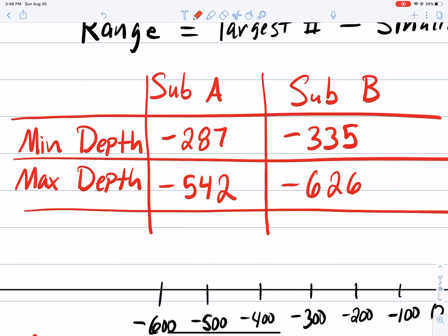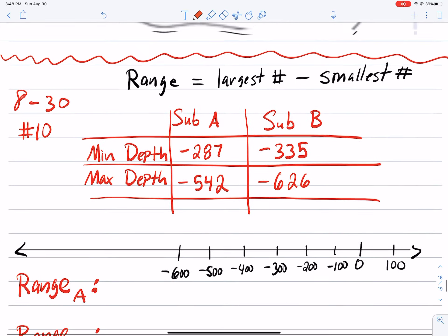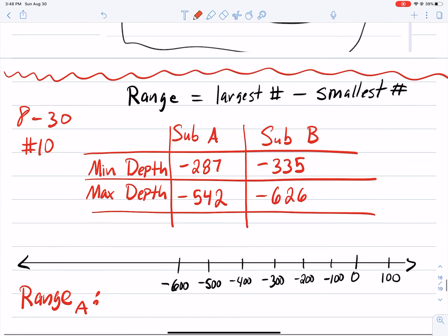With minimum and maximum depth. So the maximum depth for submarine A is negative 542. Max for submarine B is negative 626. And the question is, you're supposed to find the submarine with the largest range. And how do you find the range? Well up top here it says to find the range you take the largest number and subtract from it the smallest number.